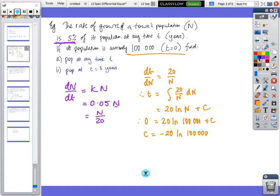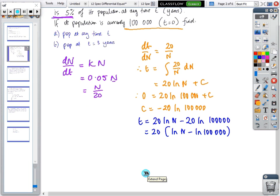So the formula could be written as t equals 20 ln n minus ln 100,000 in brackets, and that can be written as a fraction, so we've got 20 ln(n/100,000). That's your population formula.